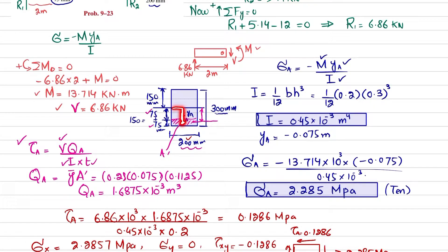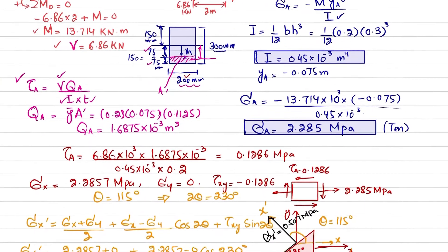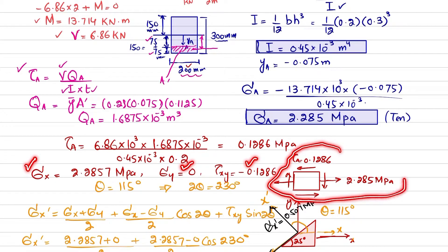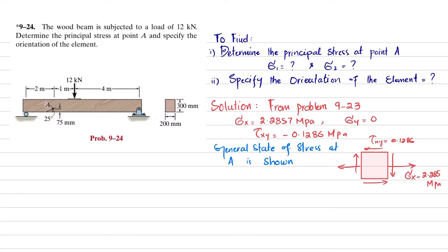Since this shear stress lies below the neutral axis, it is considered negative. So sigma x is 2.2857 MPa, there is no normal stress in the y direction, and shear stress is minus 0.1286 MPa. This is the state of stress already discussed. Now we move on to find the principal stresses.